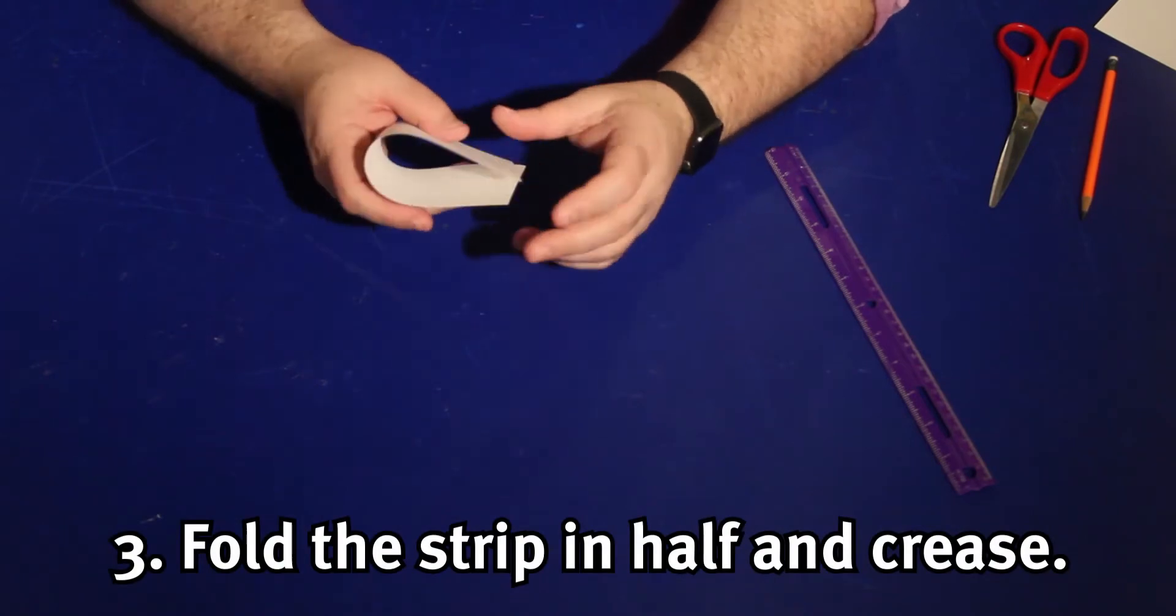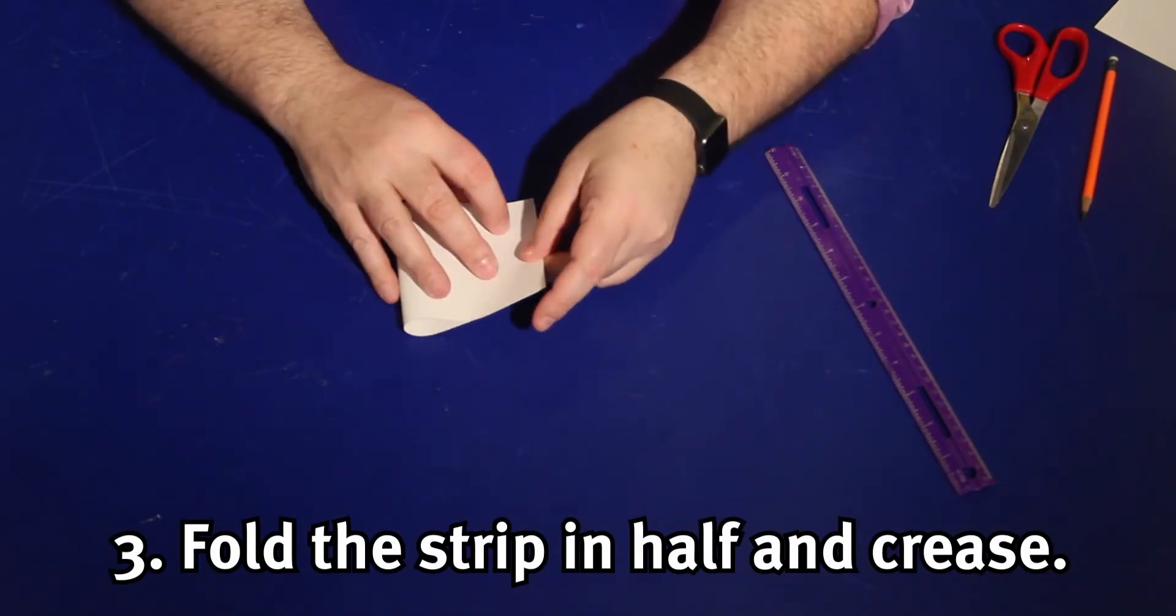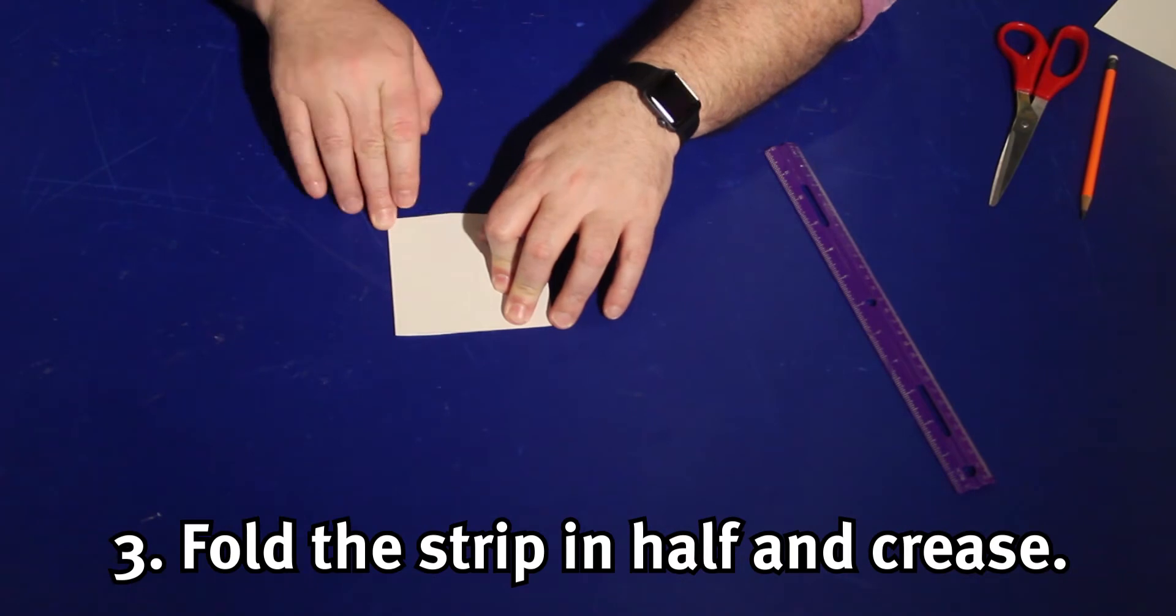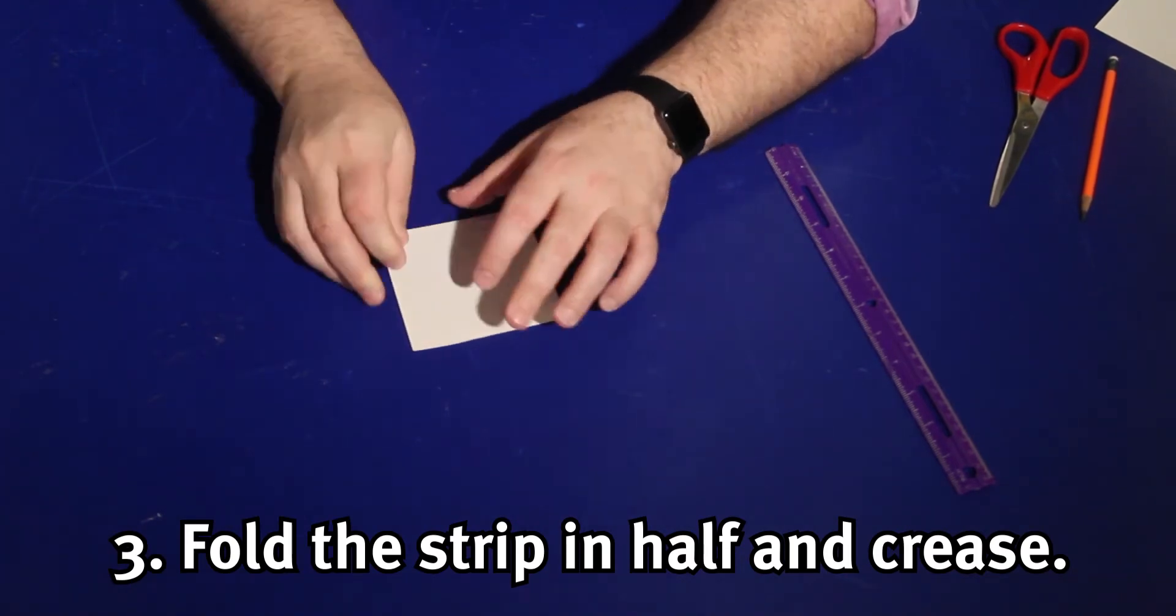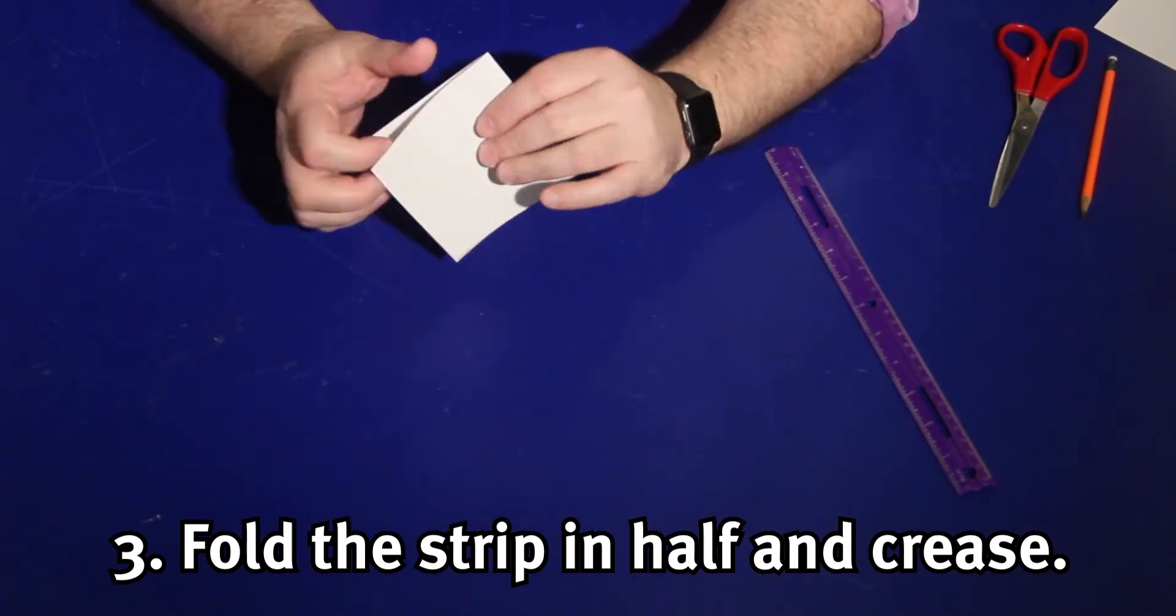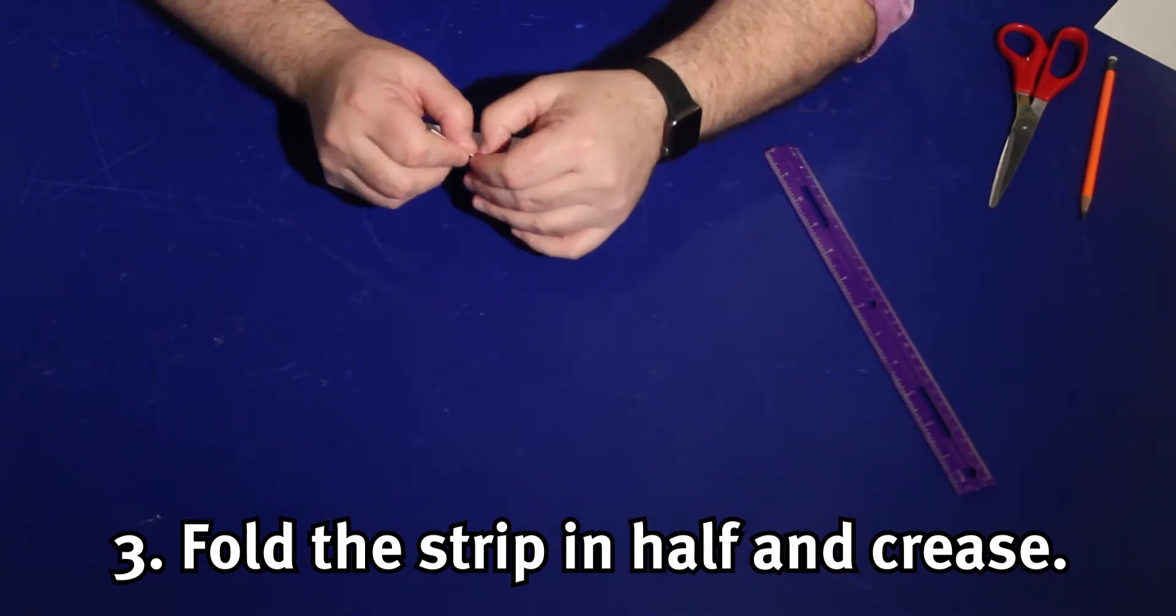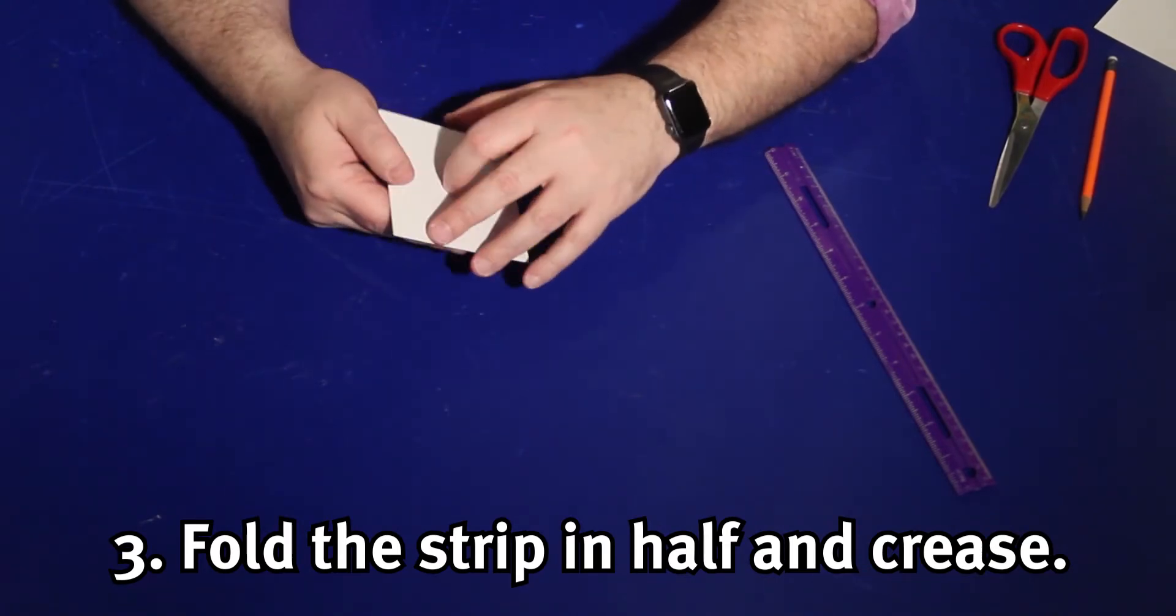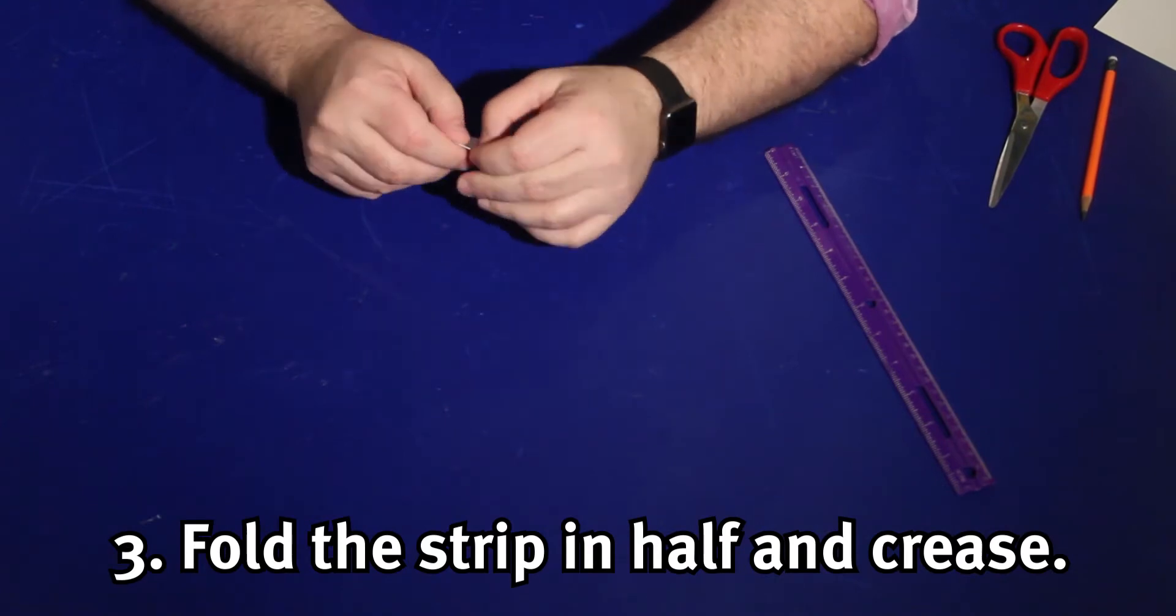I'm going to fold this example strip in half, but just like the strip can be any size, you can fold it at any point you want. While there are some rules to paper engineering, which I'm going to discuss in a minute, having the same size on both sides of the fold is not one of them. But make sure you crease it.